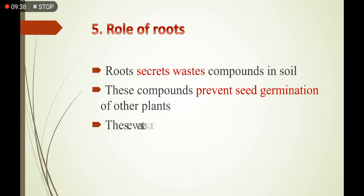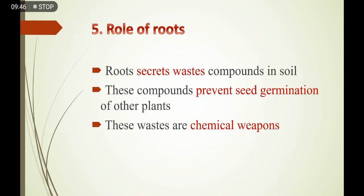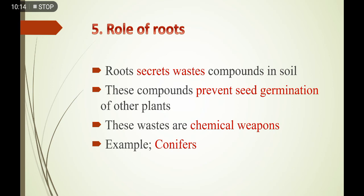اگر دیکھا جائے تو roots میں پیدا ہونے والے waste materials جڑوں سے اردگرد کی زمین میں خارج ہو جاتے ہیں، جو زمین میں آنے والے کسی دوسرے پودے کے بیج کی germination کو روکتے ہیں۔ اس طرح یہ plants اس زمین پر قبضہ کرتے ہیں — یہ waste materials plants کے chemical weapons کی طرح use ہوتے ہیں۔